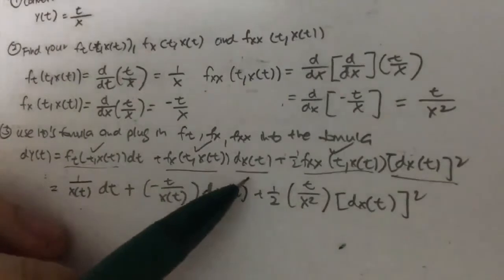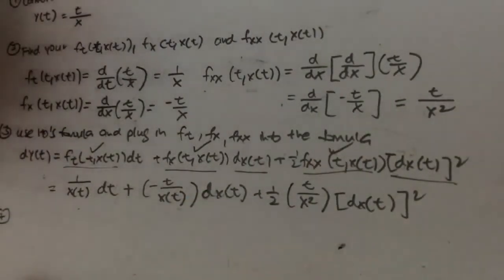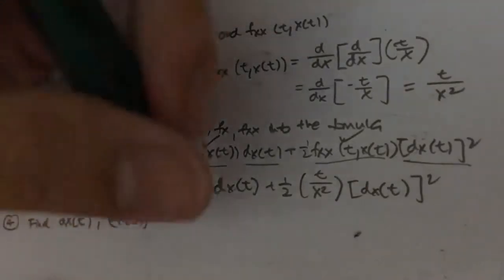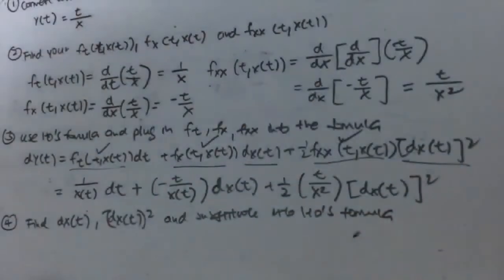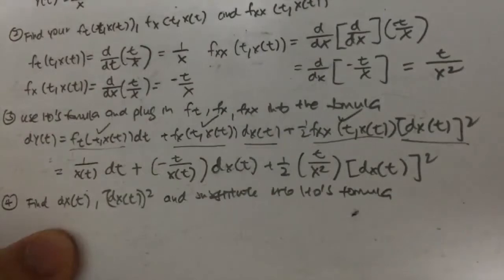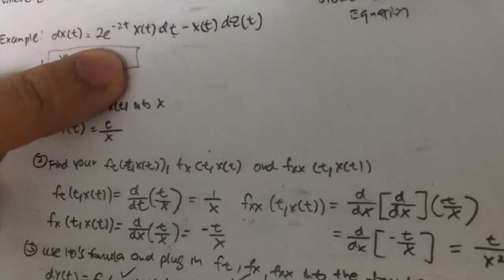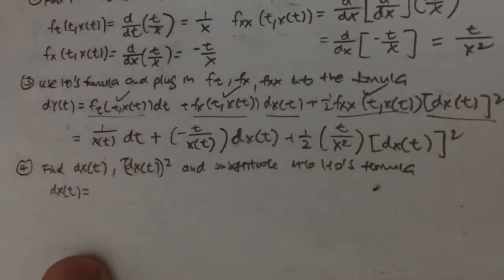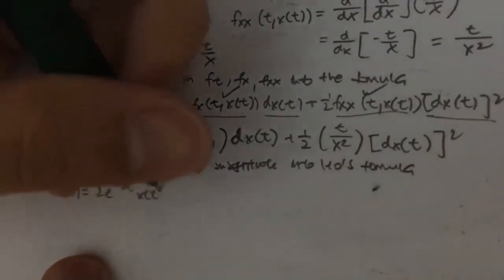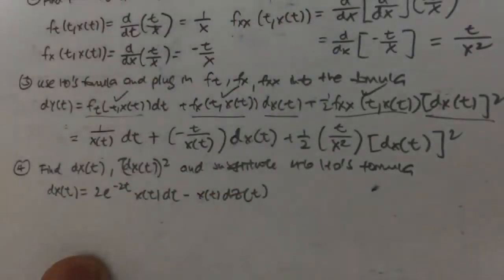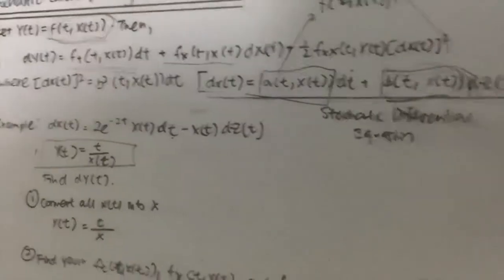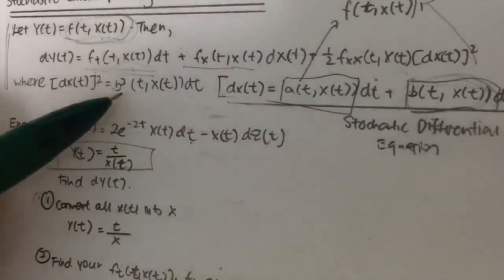The next thing we need to do is find dxt and dxt squared, and substitute into Ito's formula. My dxt is given in the question: dxt equals 2e to the power of negative 2t times xt dt minus xt dzt. But what is dxt squared? It is not simply the square of dxt. According to Ito's formula, dxt squared equals b squared(t, xt) dt.